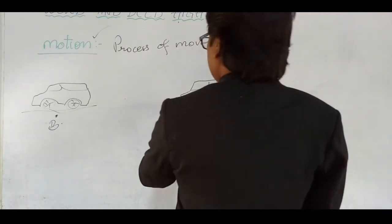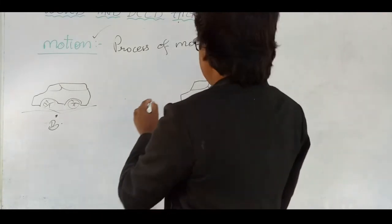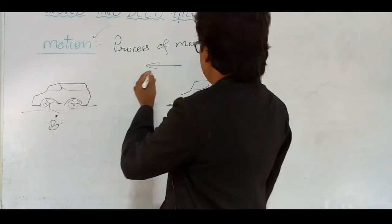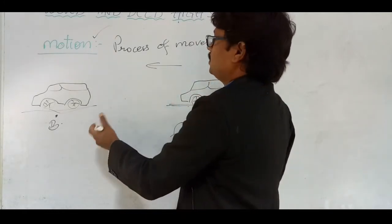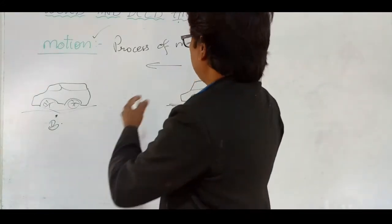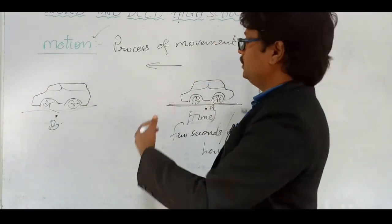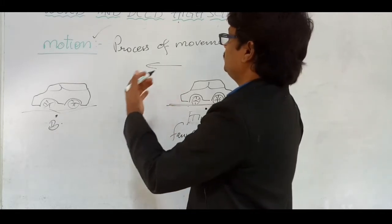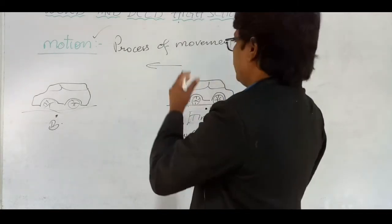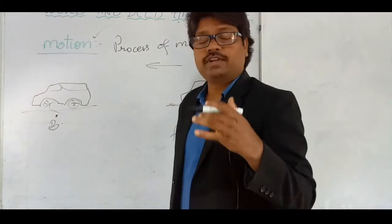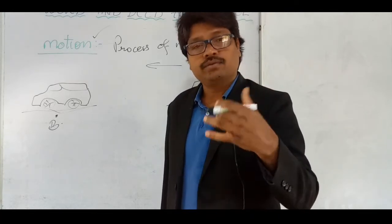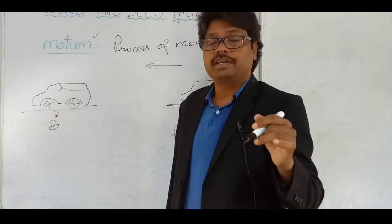Got the point? Understand? And here, the direction also you can consider. You have to take the direction of the movement into account. Now you can say the definition: an object or any vehicle is said to be in motion when it changes its position from one place to another with respect to its surroundings in a given time.